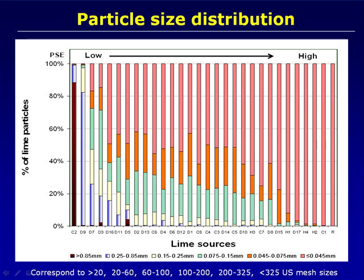As we go from left to right, we have increasingly fine and reactive limestones. On the left hand side, we have a limestone where most of the particles are greater than 0.85 millimeters, which means they would be retained on a 20 mesh screen. On the right hand side, there are very fine limes that would even pass through a 325 mesh screen, with a diameter less than 0.045 millimeters.